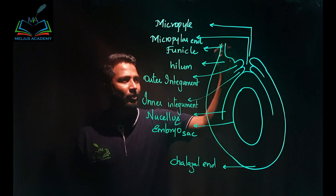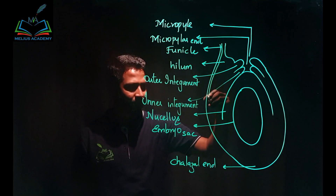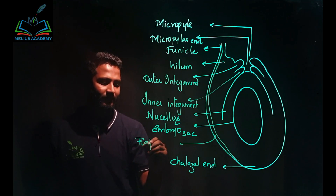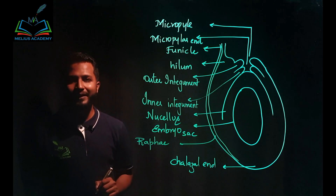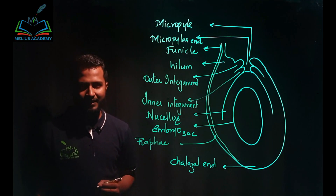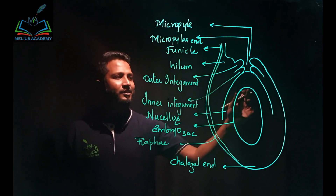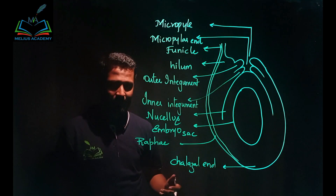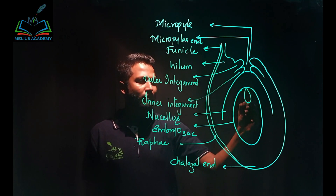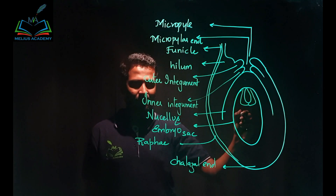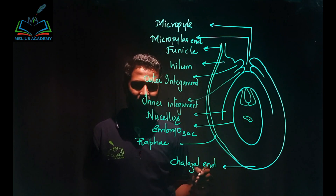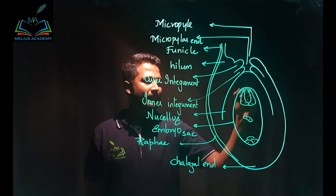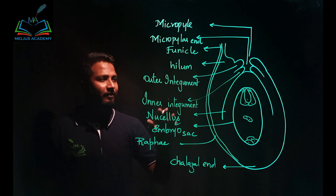What I'll do is connect a specialized tissue called raphae from here to the bottom — that gives us our tenth labeling. Some people may say raphae is not in NCERT, so if you want something strictly from NCERT, you can draw the inside of the embryo sac. Inside we have the egg apparatus on top, polar nuclei at the center, and antipodal cells at the bottom. This is a very important structure.